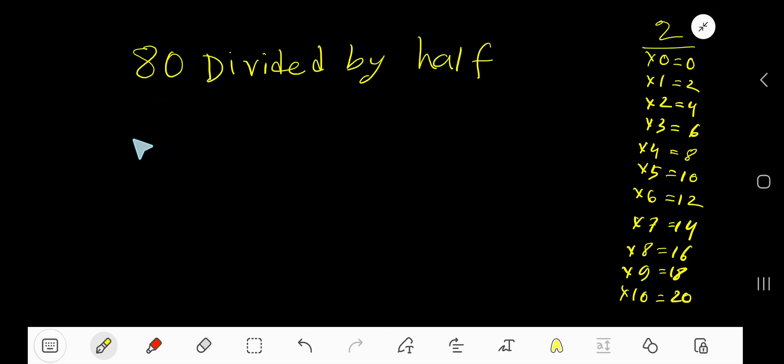80 divided by half. Divided by half means 1 over 2. So now to divide 80 by half, how can you proceed? This is a fraction, so division means multiplication by the reciprocal of the fraction. That is, change the position of numerator and denominator.